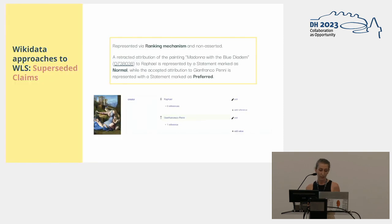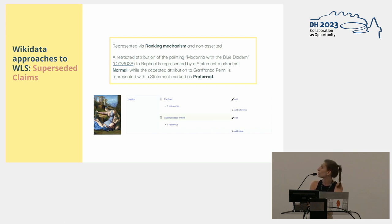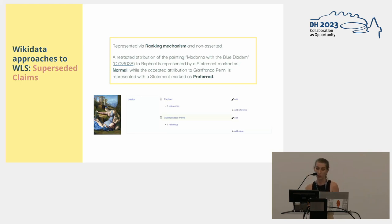We surveyed three main approaches on how Wikidata represents this kind of knowledge. The first one is superseded claims, represented via a ranking mechanism that attaches a value to each claim — preferred, normal, or deprecated — depending on the truth value of such claim. For example, take this painting that was once attributed to Raphael, marked with a normal rank, while now it has been attributed to Gianfranco Penny, shown in green, meaning that statement is preferred.